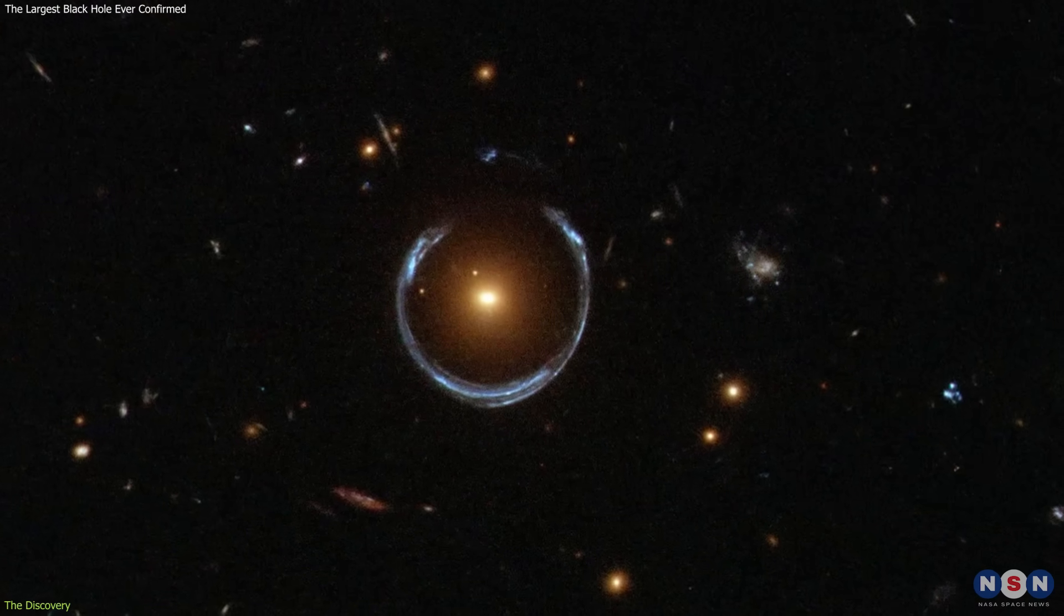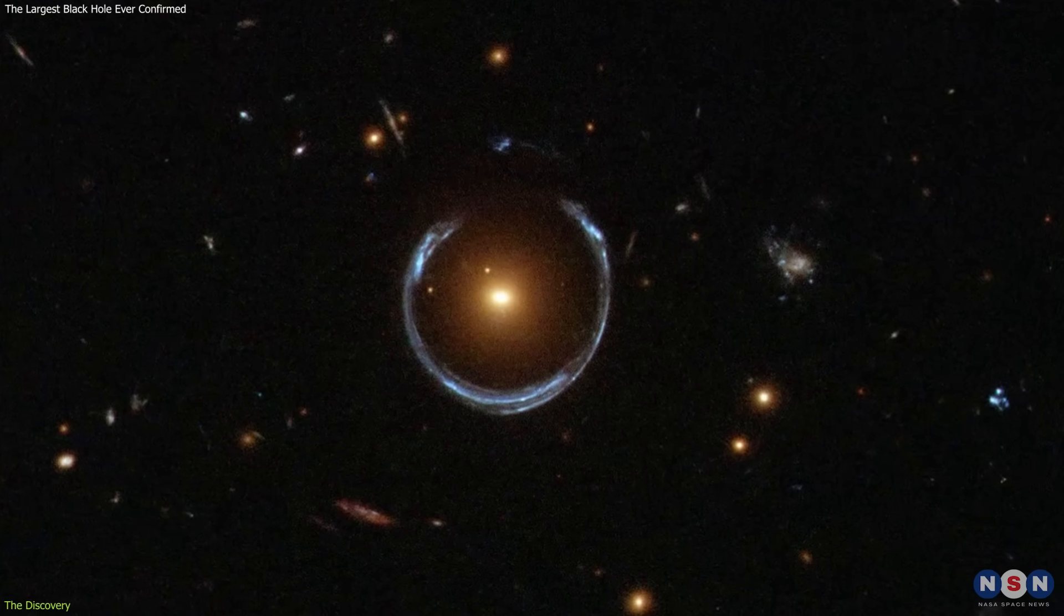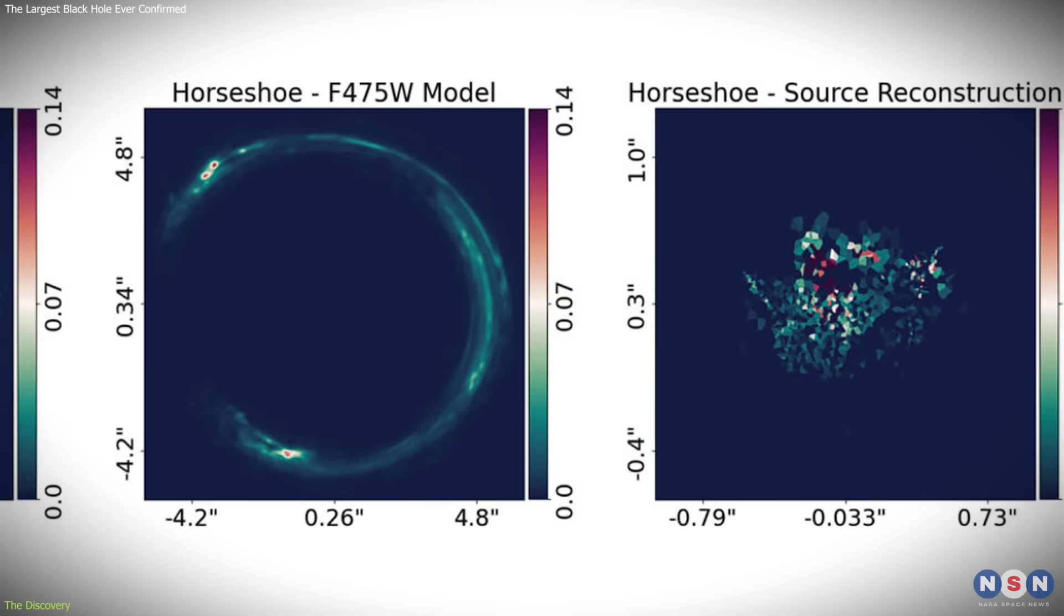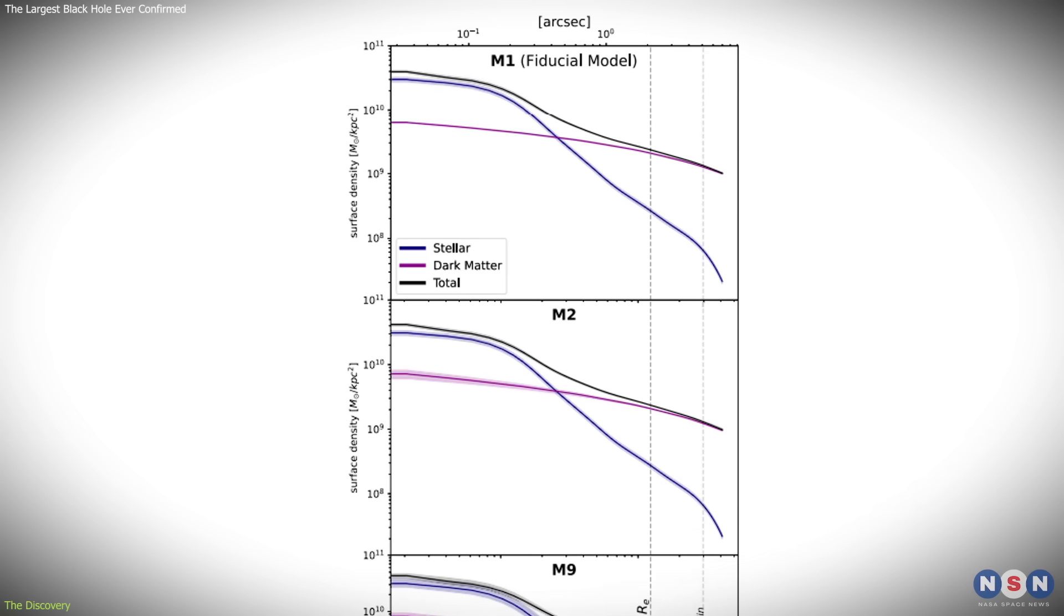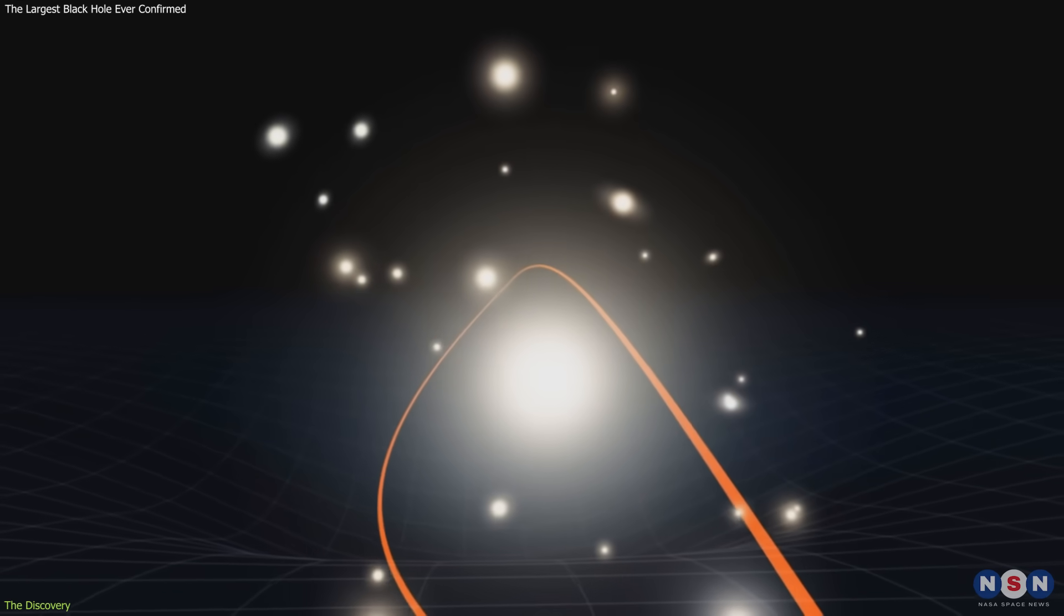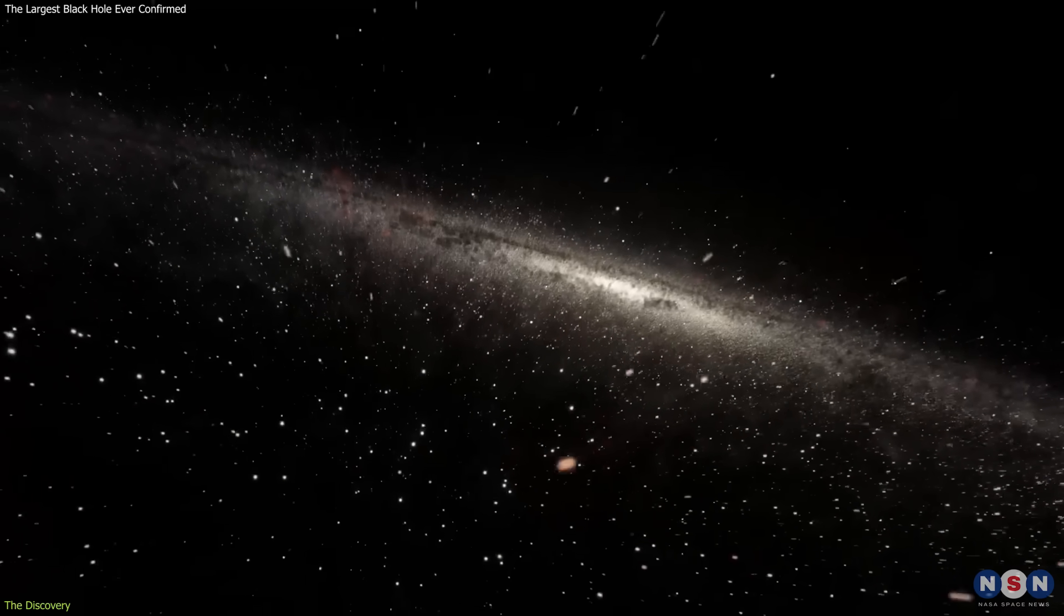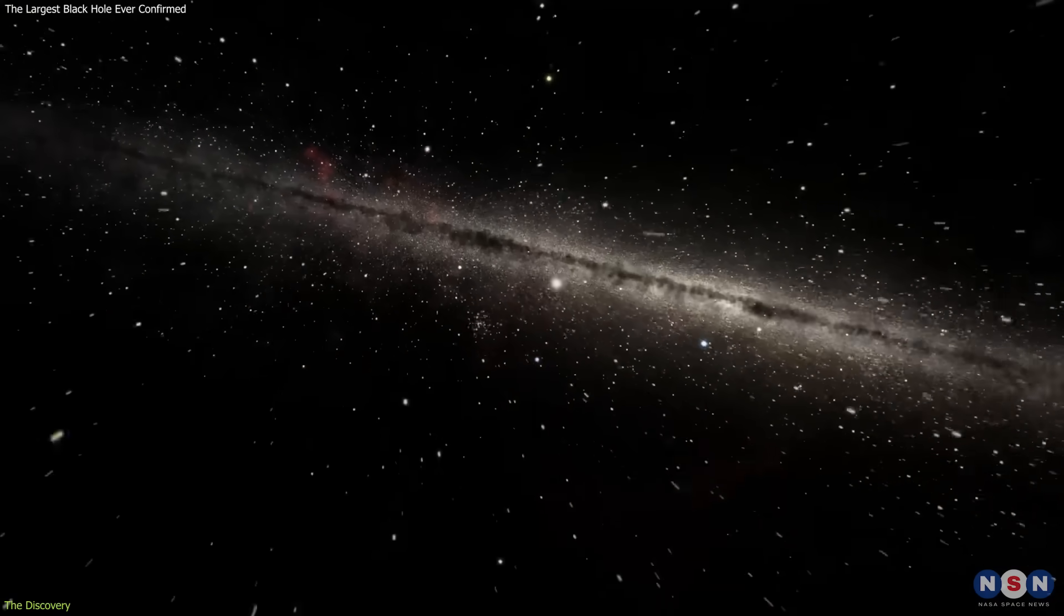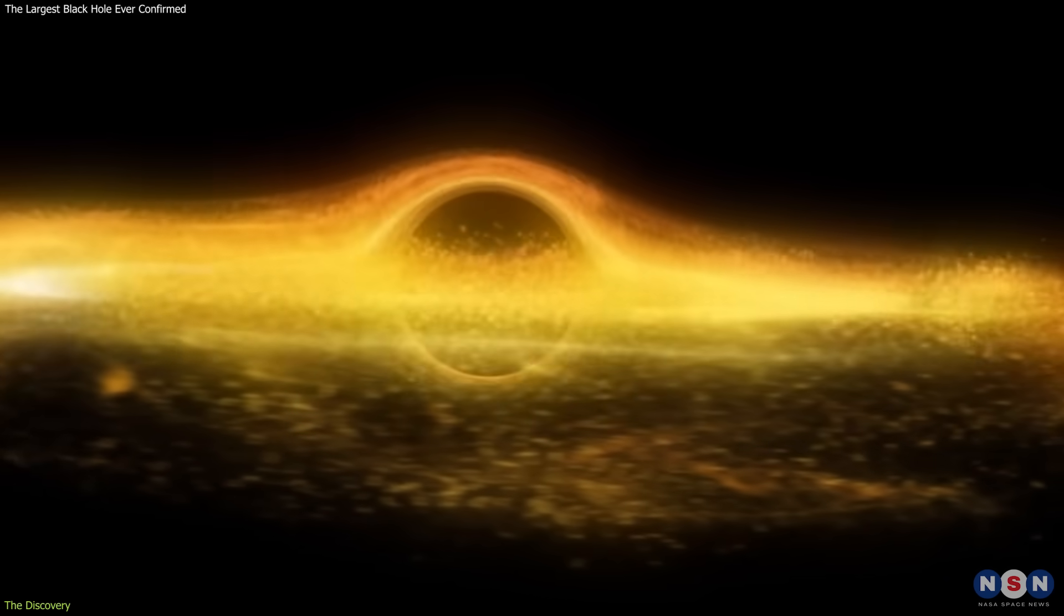Second, they modeled the gravitational lensing effect seen in Hubble Space Telescope images. The way the galaxy bent light from the background source revealed details about how mass is distributed within it. By combining stellar dynamics with lensing, the researchers could separate out how much of the galaxy's inner mass comes from stars, dark matter, and the central black hole.